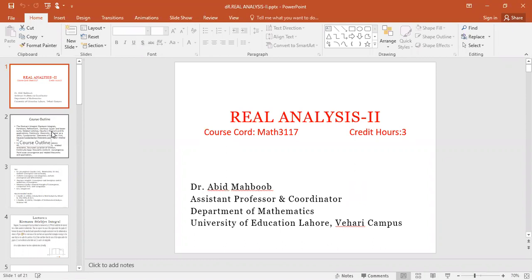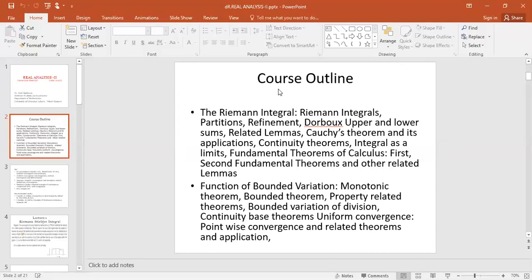This course's outline includes Riemann integration with topics on partitioning and related results, the Fundamental Theorem of Calculus, and other related theorems. The second chapter is on functions of bounded variation, where we will discuss monotonic functions, bounded variation theorem, properties related to bounded variation of regions, continuity-based theorems, uniform convergence, pointwise convergence, and related theorems and applications.